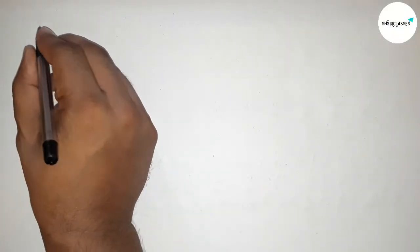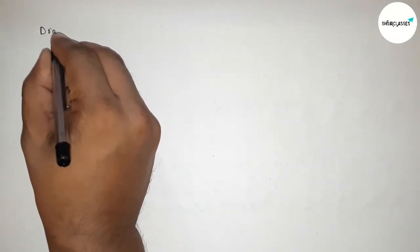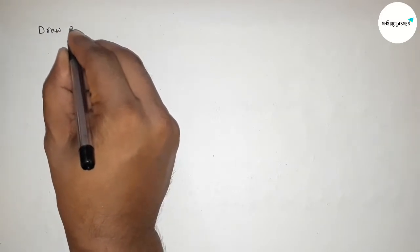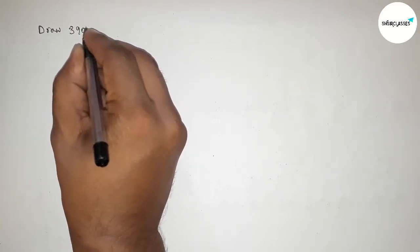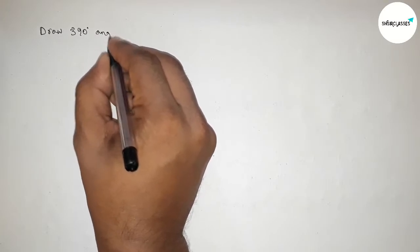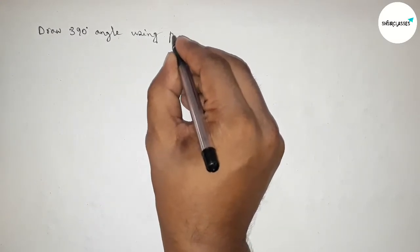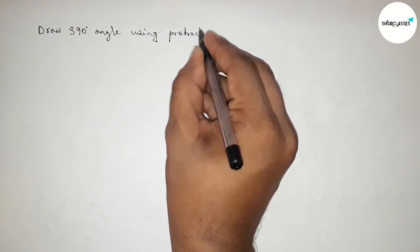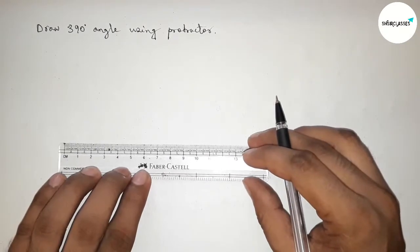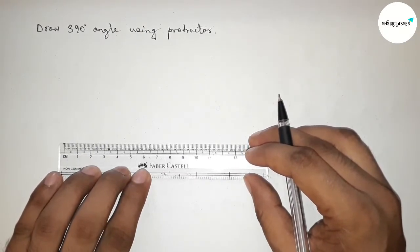Hi everyone, welcome to SI Share Classes. Today in this video we have to draw a 390-degree angle by using protractor in an easy way. So let's start the video. First of all, we have to draw here a straight line of any length, so first drawing here a line.